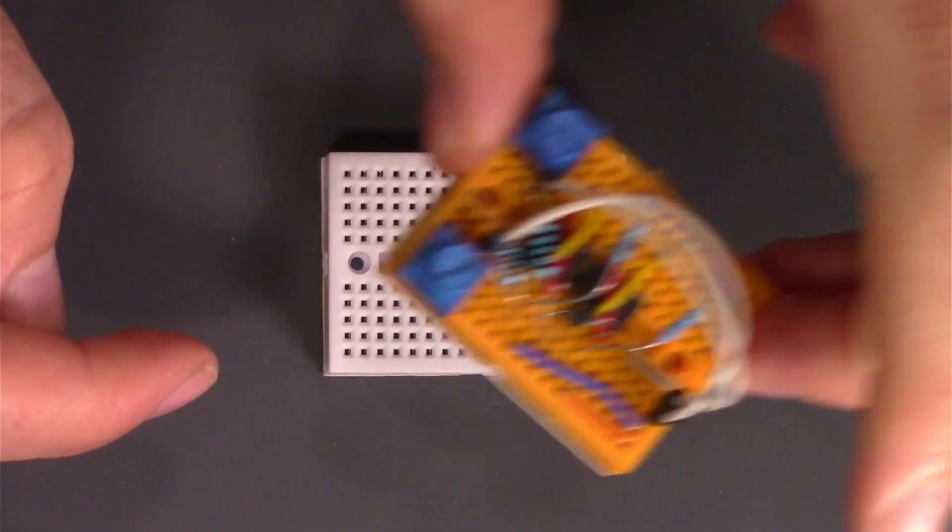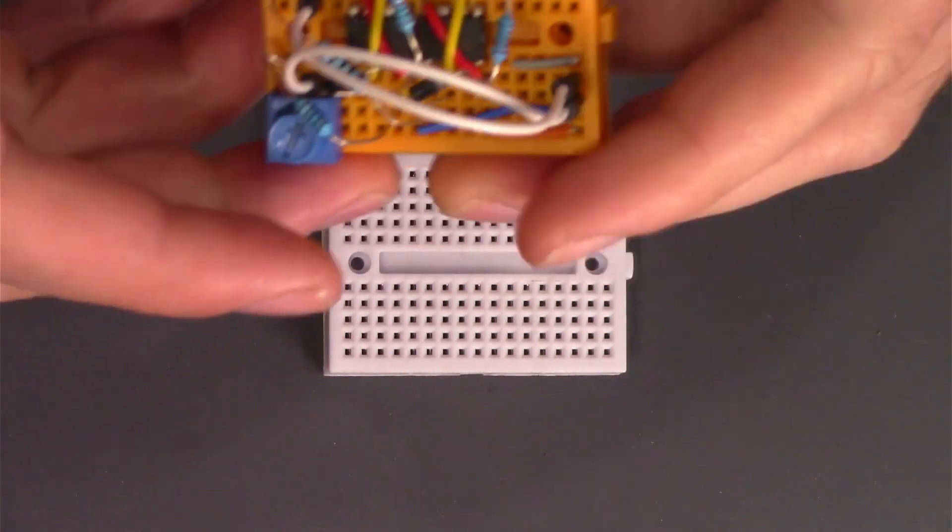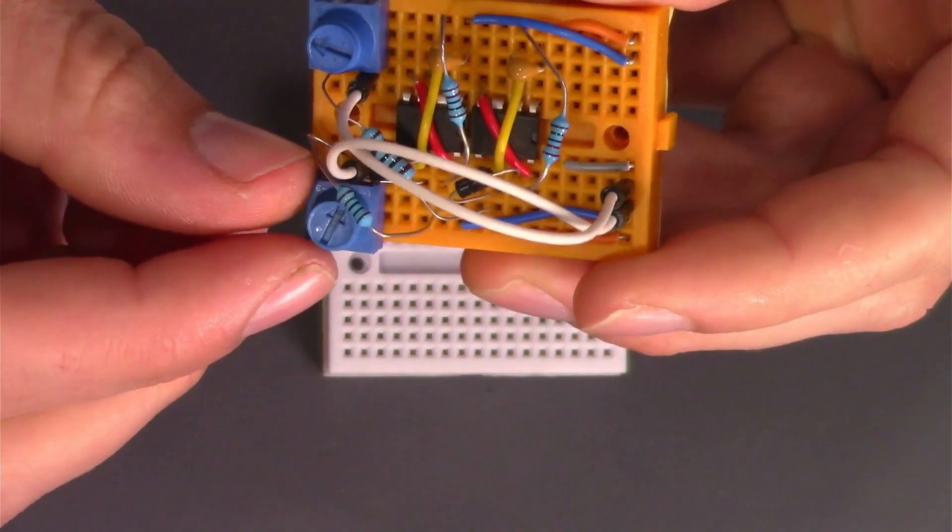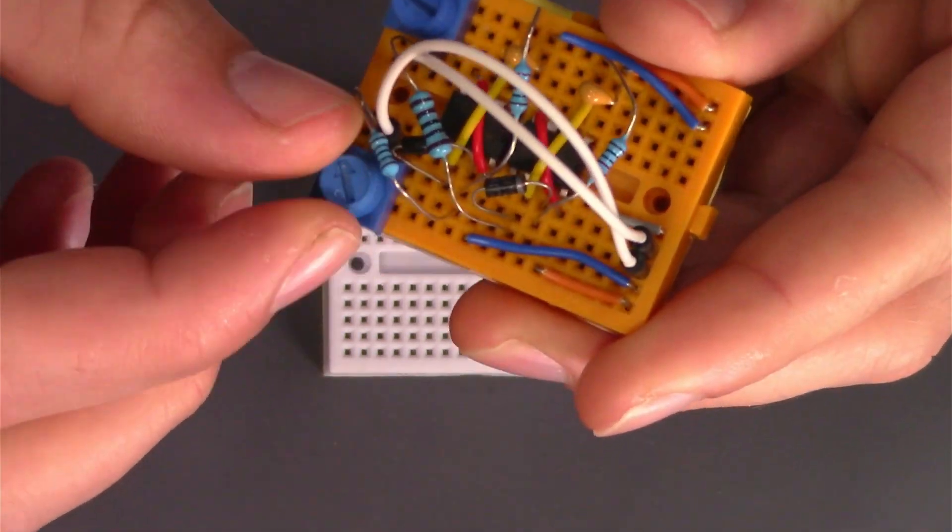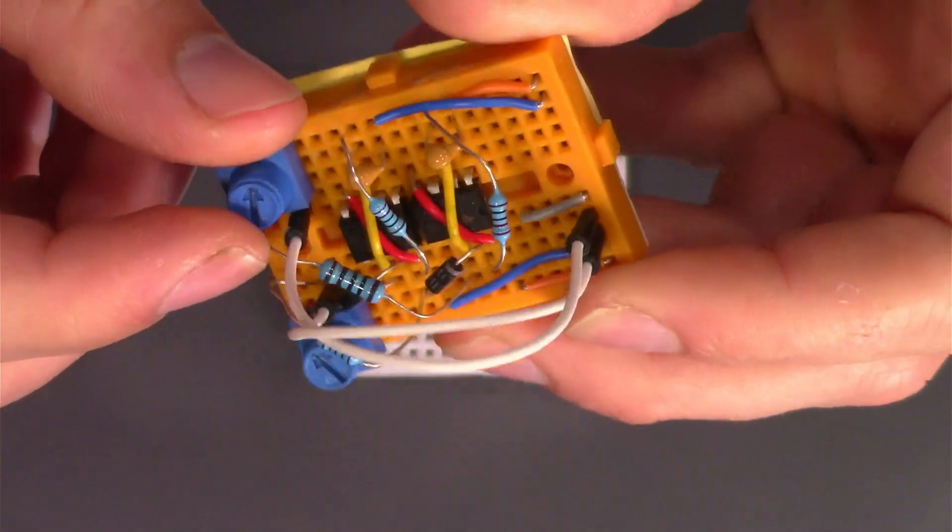I've got this mini breadboard. After I'm done wiring everything up, it's going to look a little something like this one. The blue knobs are potentiometers. By twisting them, I'll be able to control the direction the servo is turning.